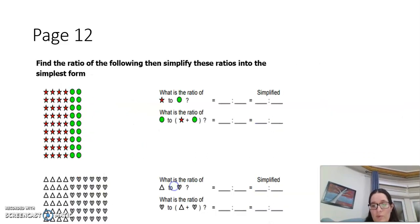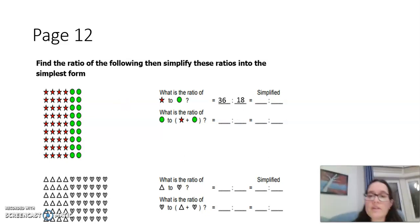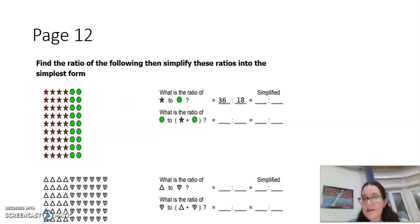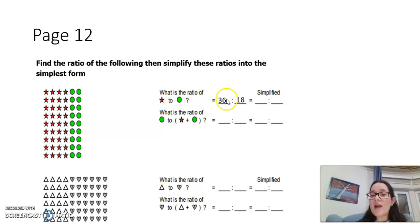Here I want to find the ratio then simplify the ratio. What is the ratio of stars to circles? I'm going to count the stars and circles, and the ratio will be 36 to 18. To simplify the ratio, we divide it by the highest common factor. What is the highest common factor between 36 and 18? It's 18, so the ratio is 2 to 1.